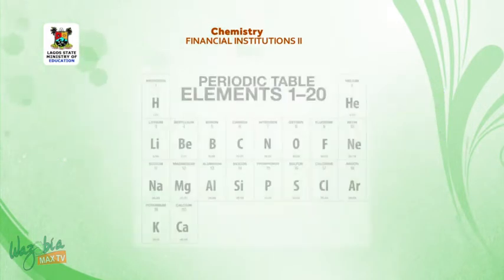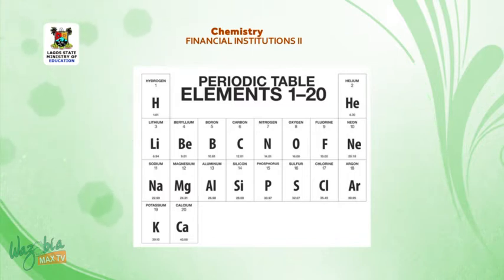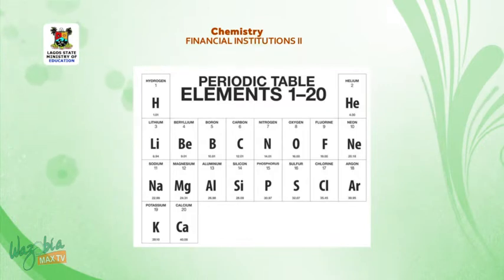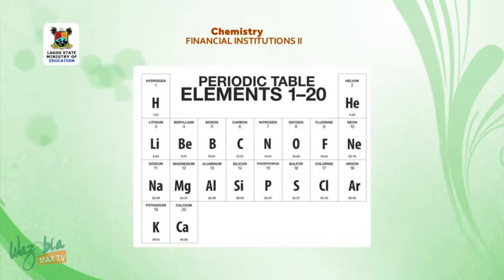Now let us take a look at the short form of the periodic table, that is, the periodic table for the first 20 elements. In this table, we have 8 vertical columns and 4 horizontal rows. The first vertical column, also known as group 1 elements, contains the following elements: lithium, sodium, and potassium.